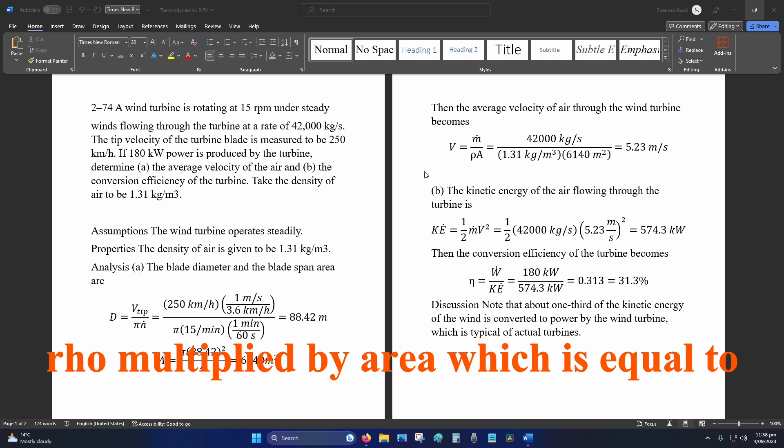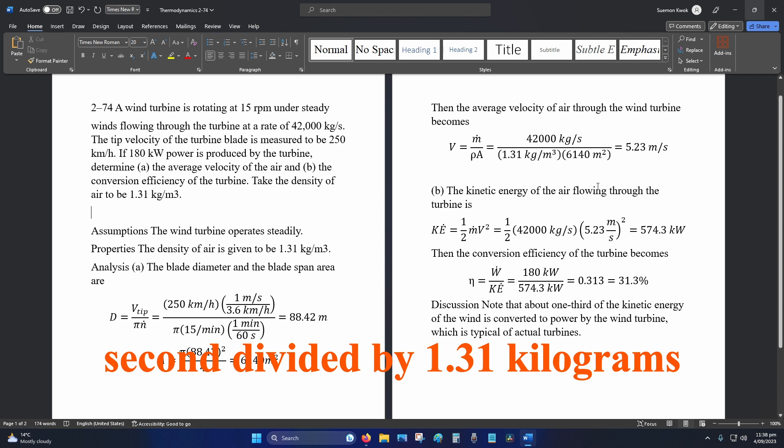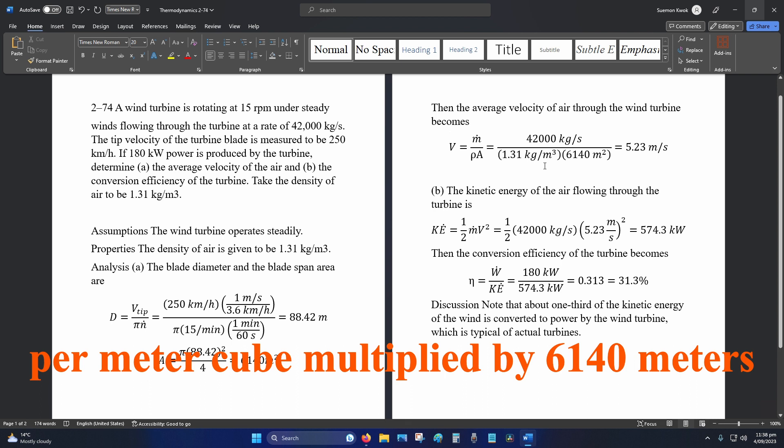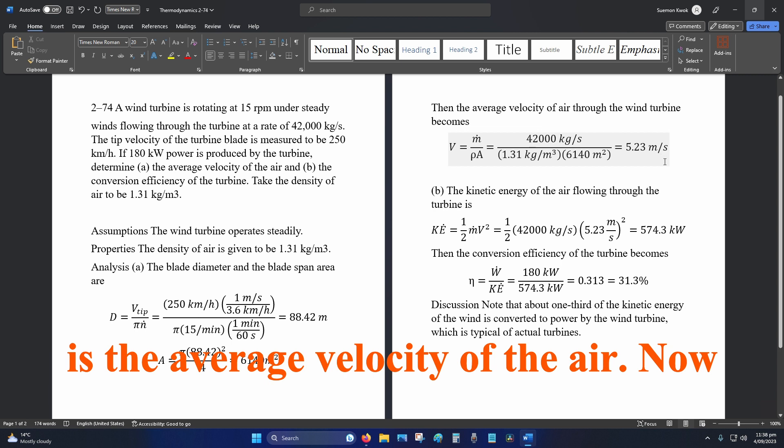That equals 42,000 kilograms per second divided by 1.31 kilograms per meter cubed times 6,140 meters squared, giving us 5.23 meters per second. That is the average velocity of the air.